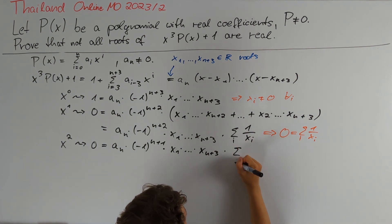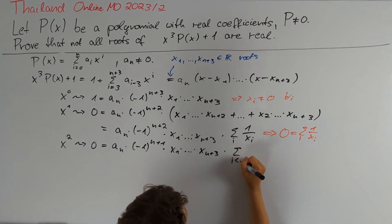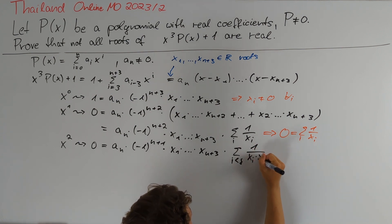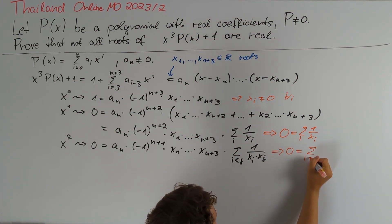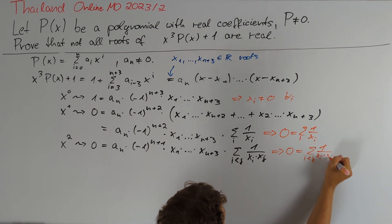we have to multiply with the sum of all indices i less than j. We want to count each pair once of 1 divided by xᵢ times xⱼ. In the same way, this tells us that 0 is equal to the sum over all i less than j of 1 divided by xᵢ times xⱼ.